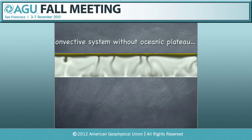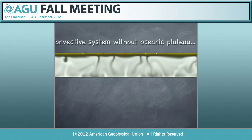This is the situation of the model without the oceanic plateau. Over close to a billion years of evolution, the Rayleigh number is about 10⁶ to 10⁷, and you have classical convective motion with cold drips and hot plumes rising from the boundary.